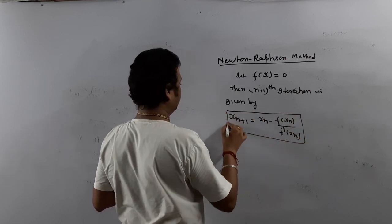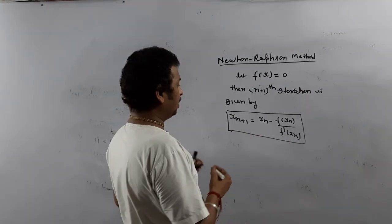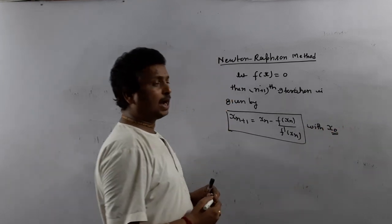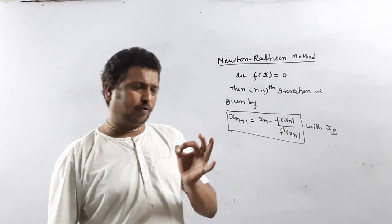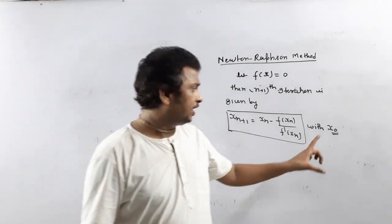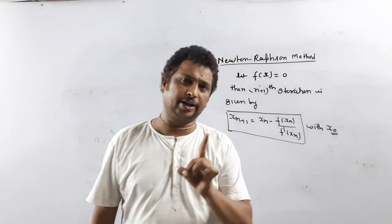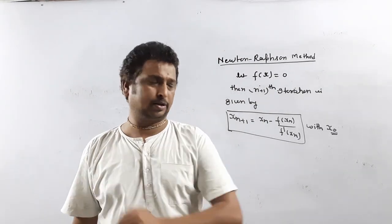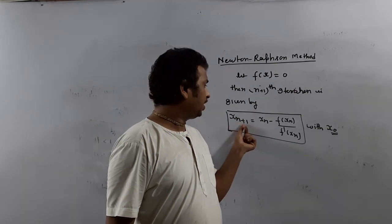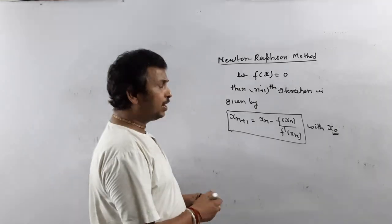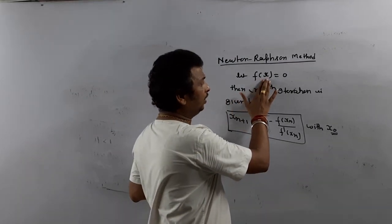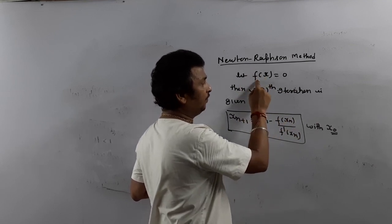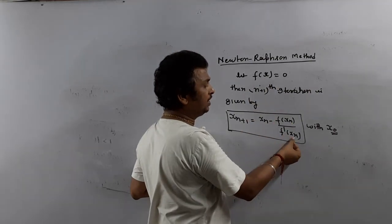This is very easy. x_0, either they will give or you have to suppose, but usually they will give you the initial root x_0. Now we have to calculate x_1, x_2, x_3, x_4 and so on. What is your work? Whatever f(x) is given, in place of x put x_n, then differentiate f(x) and find out f'(x) and put f'(x_n) there.